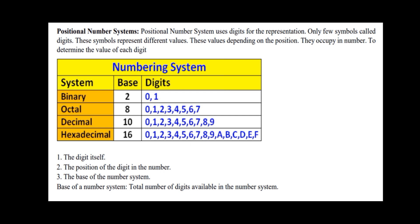First is binary. Binary is 0 and 1. For example: 1, 0, 1, 1, 0, 1, 1, 1, 0, 1, 1. So here we have 2 digits — that is the base. The base tells how many digits are used. Binary is 0 and 1, so the base is 2.